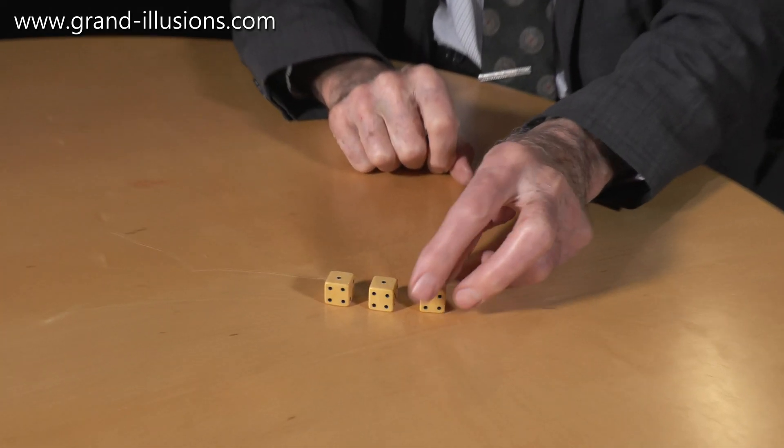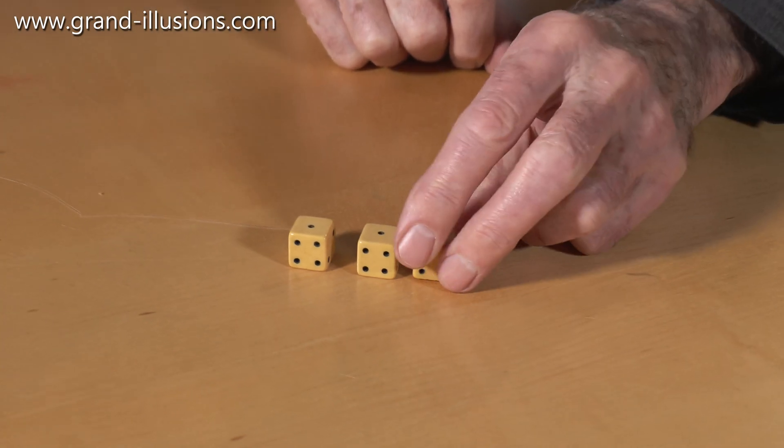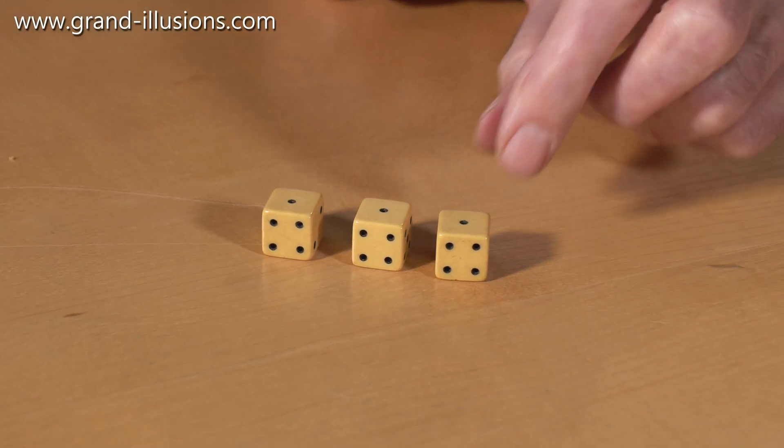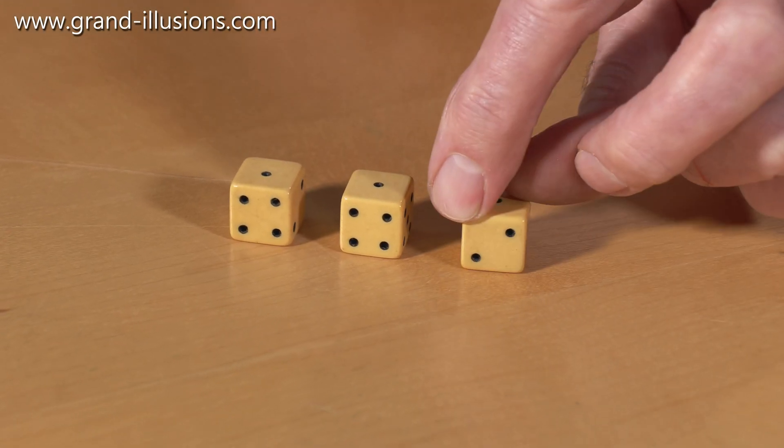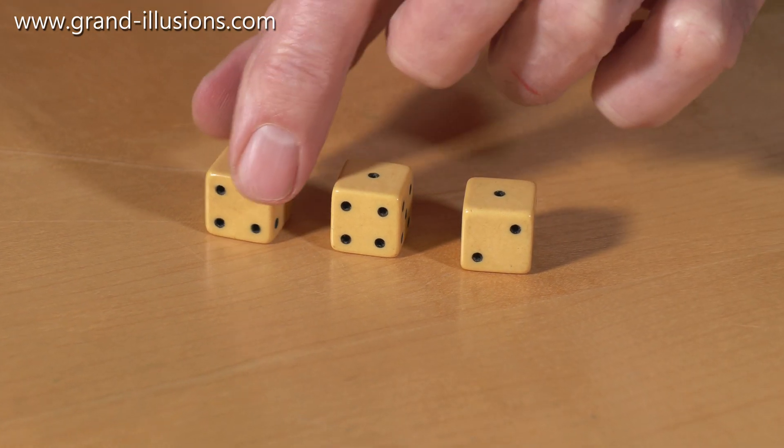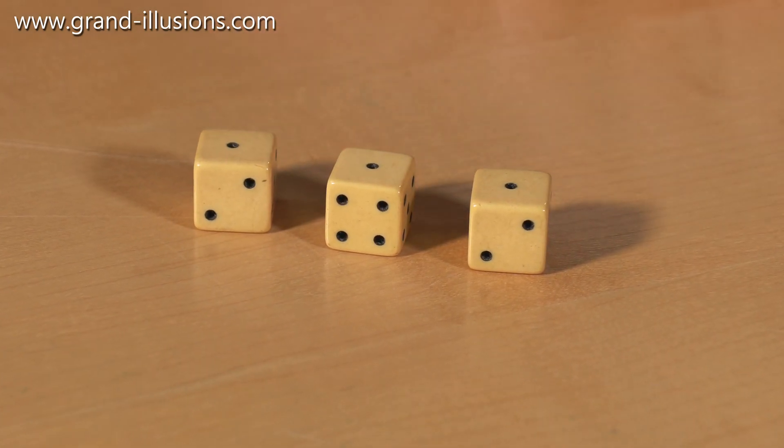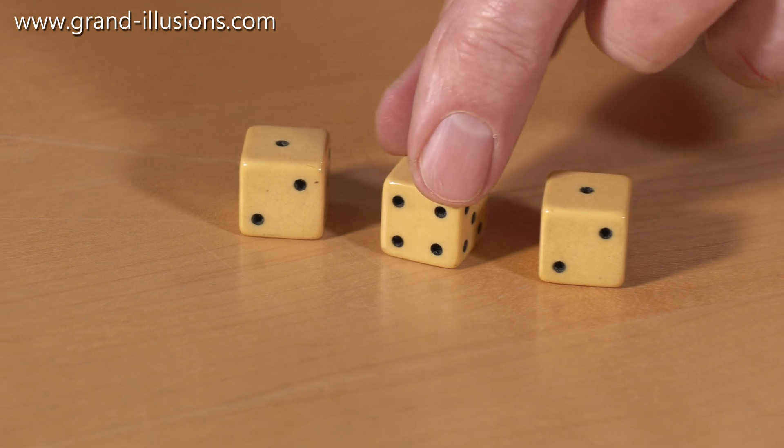If I place them like this, they've got the six on the bottom and the opposite sides add up to seven. Turn each one round, I'll try that one there, I'll turn the outer one like this. So why should the middle one be different and do that?